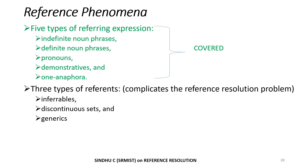So far we have seen all five types of referring expressions: indefinite noun phrases, definite noun phrases, pronouns, demonstratives, and one anaphora with examples. We will continue with the three types of reference which complicate the reference resolution problem: they are inferables, discontinuous sets, and generics.